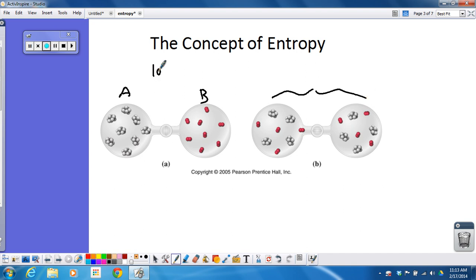So low entropy, high entropy. So what entropy measures is the randomness or disorder of a system. So the more disorderly it is, the higher the entropy is. The more ordered it is, the lower the entropy is.